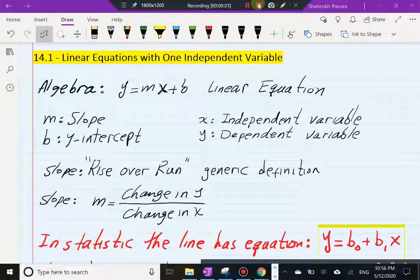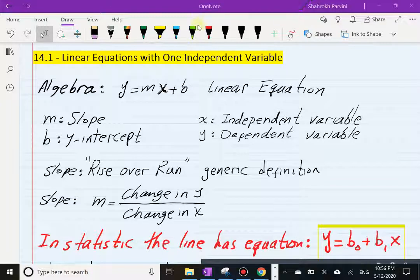Hello everyone, we are in Chapter 14, and in Chapter 14 we're going to talk about descriptive methods in regression and correlation. Before we take a look at the topic of regression, which falls under the prediction portion of our course, in section 14.1 we're going to briefly take a look at linear equations with one independent variable.